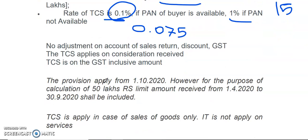There is a proviso as well as some clarification issued by the CBDT. As per this section, whatever TCS we are calculating, there is no adjustment required for the purpose of sales return, discount, as well as GST. So for the purpose of collecting the TCS, you have to collect the TCS on the amount which is inclusive of GST as well as the discount. If there is any sales return, then also we do not have to consider that sales return amount. There will be no adjustment on account of sales return, discount, or GST.